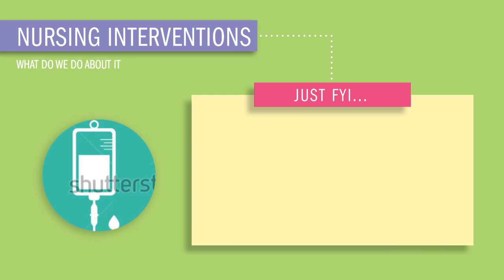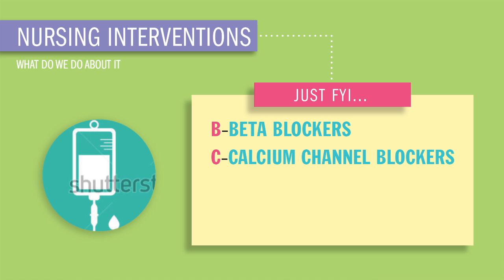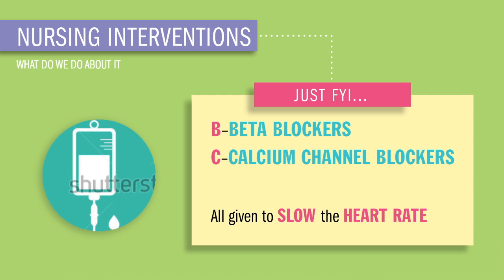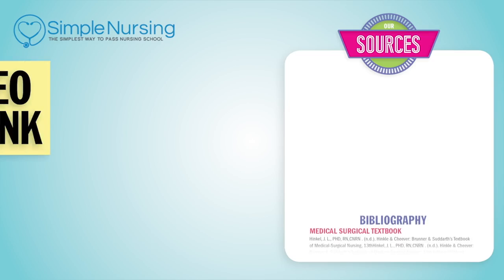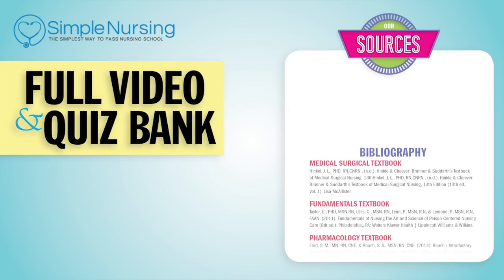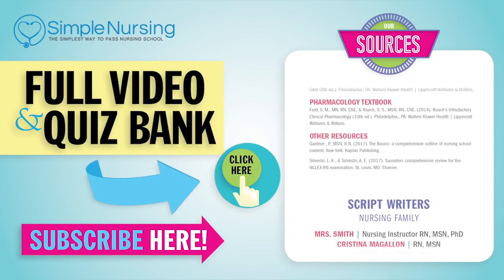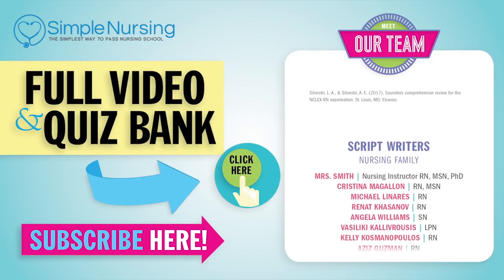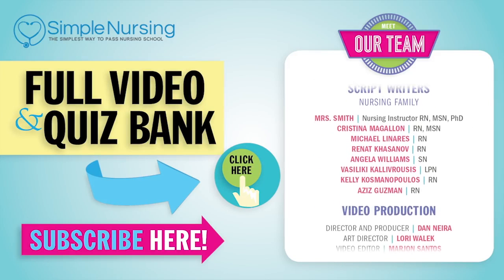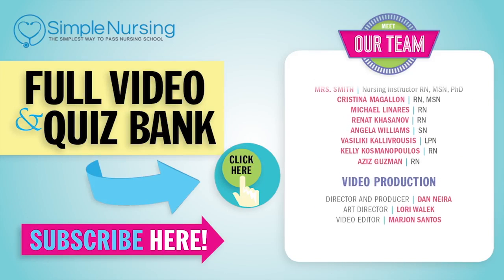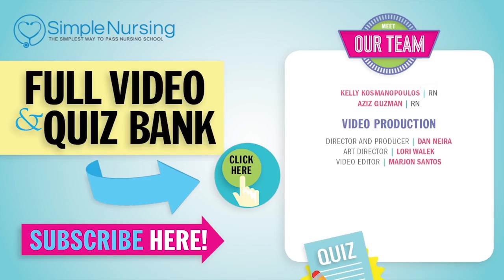Just FYI, some nursing considerations: B and C drugs — beta blockers and calcium channel blockers — are all given to slow the heart rate and can suppress these premature contractions. All right guys, see you next time.